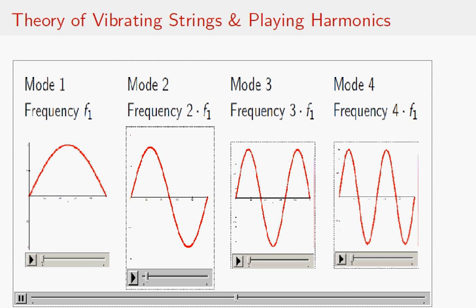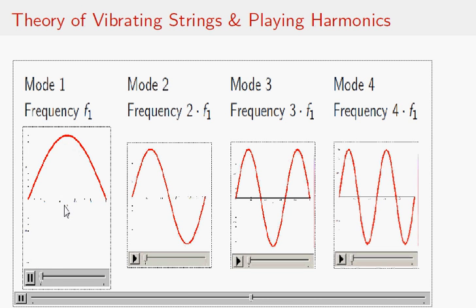All even-numbered modes have a node at one-half the string length. For the odd-numbered modes, however, the point at half the string length is moving, vibrating.